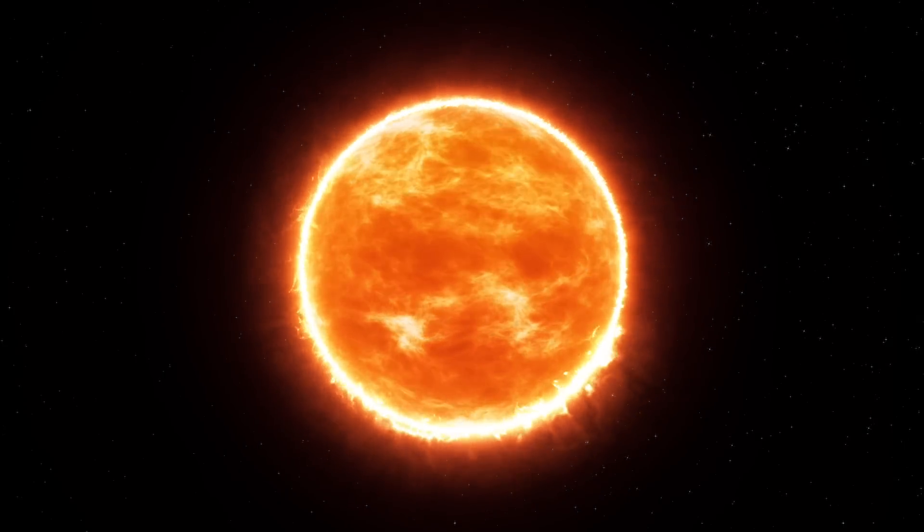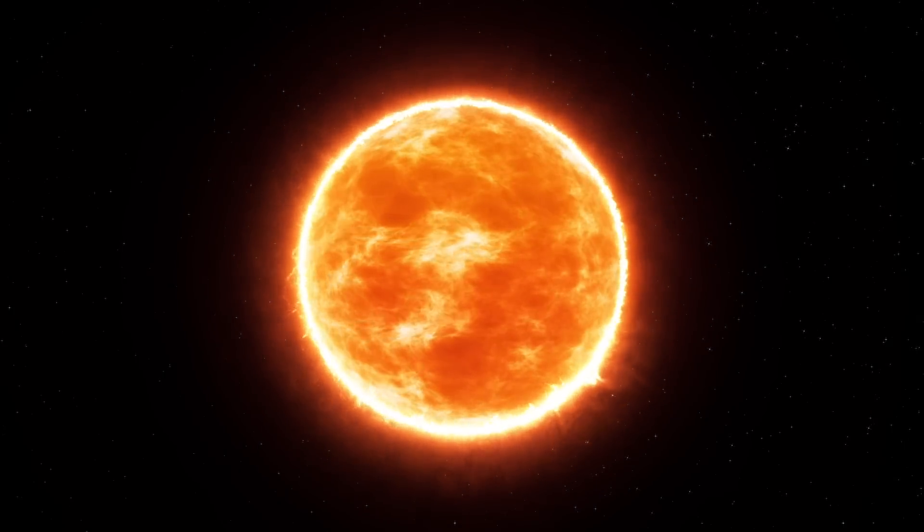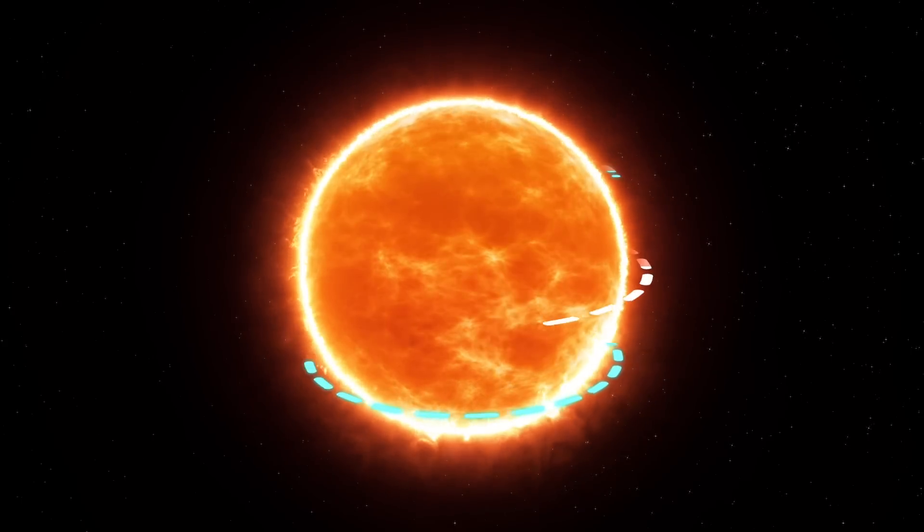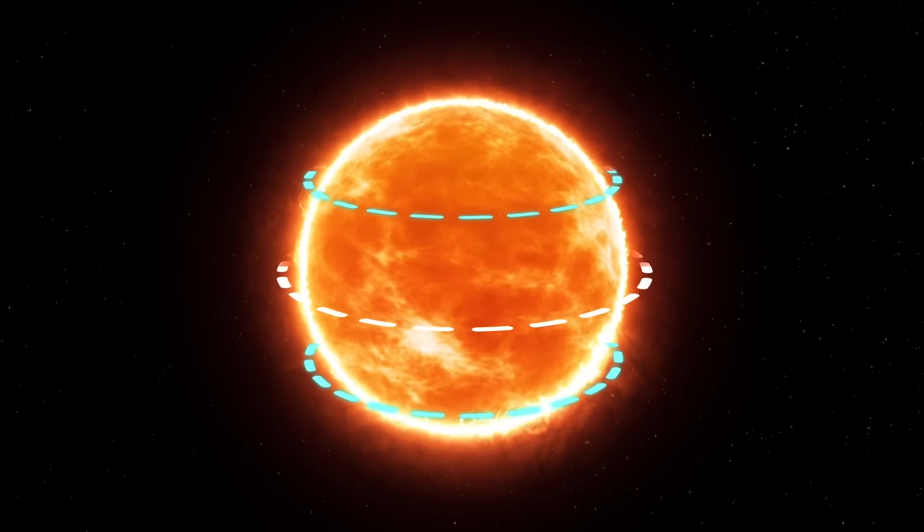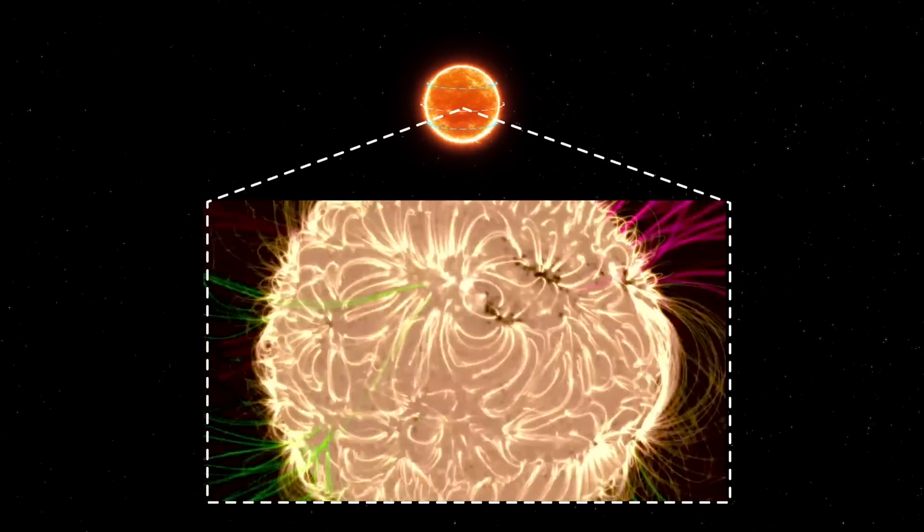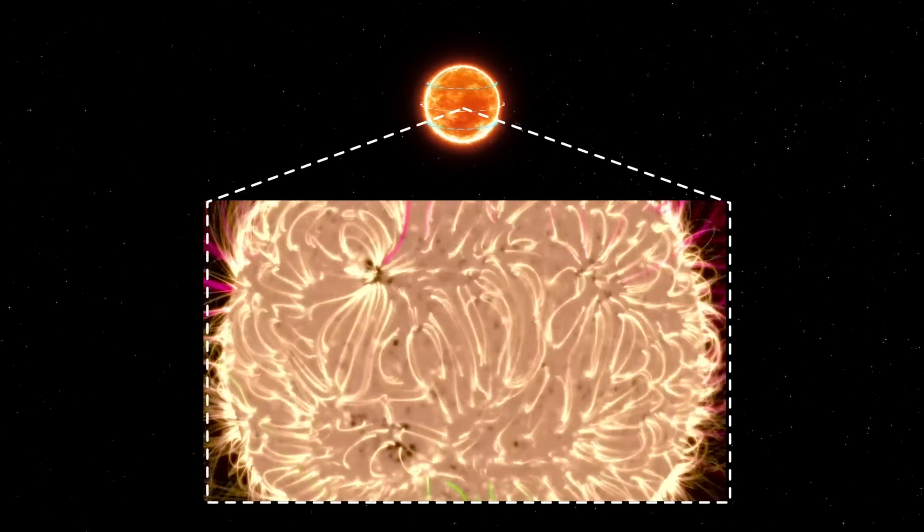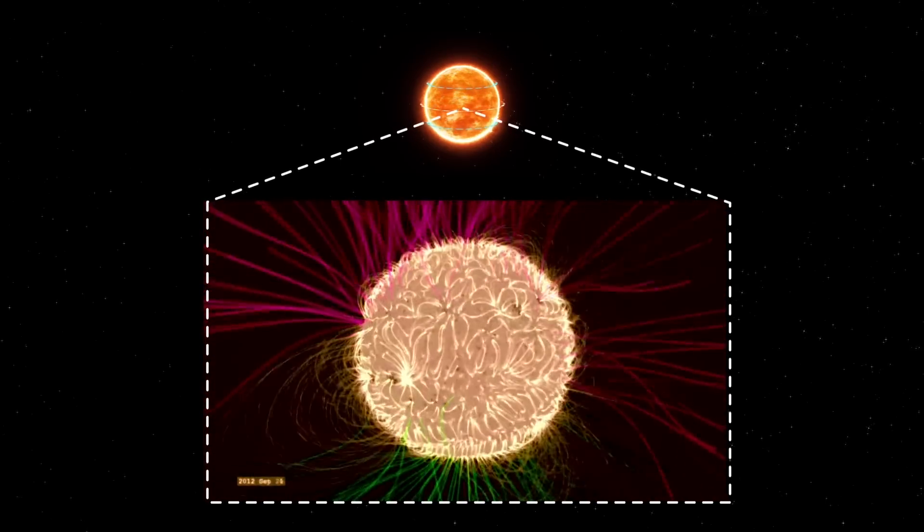Now here's something interesting that you might not have known: The Sun does not rotate as a solid body. Instead, different parts of the Sun rotate at different rates. The equator rotates faster than the poles, a phenomenon known as differential rotation. This differential rotation stretches and twists the magnetic field lines, amplifying the magnetic field.